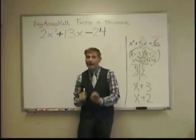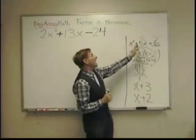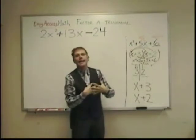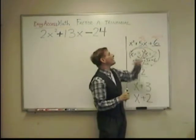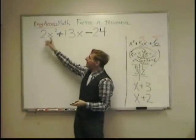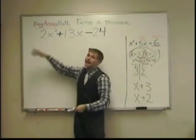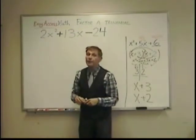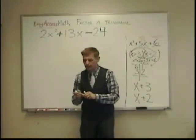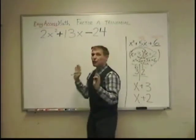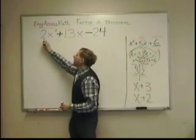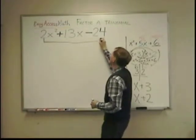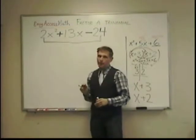You still follow the basic rule of adding up to the middle number, combining, adding or subtracting to the middle number, and multiplying to the last number. But this two over here, and it could be a three or a five, changes things a little bit.